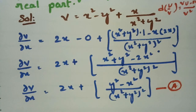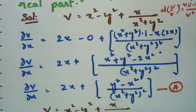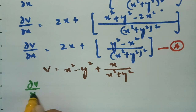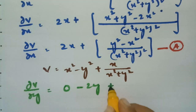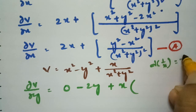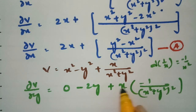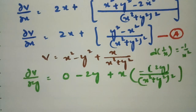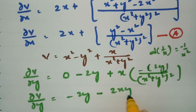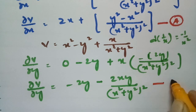Now v is given as x square minus y square plus x by x square plus y square, and I am going to differentiate with respect to y. So dou v by dou y: for x it is 0, for y squared it is 2y, and x is a constant with respect to y. Derivative of 1 by x with respect to y gives minus 2y in the numerator. So dou v by dou y is equal to minus 2xy divided by x square plus y square whole square. This is equation number b.